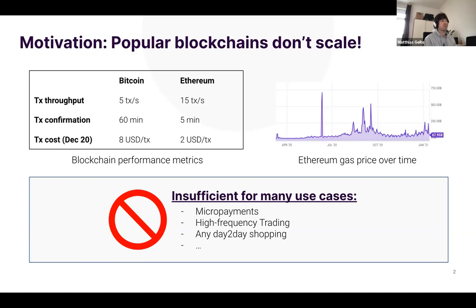You can see a graph of the gas price, which is the basis for the Ethereum transaction price. Even the inherent gas price varies a lot over time depending on load on the Ethereum network. This makes these blockchain technologies insufficient for certain use cases — for example, micropayments require high throughput, low transaction cost, and fast confirmation times. The same applies to high-frequency trading and day-to-day shopping of low-value goods.